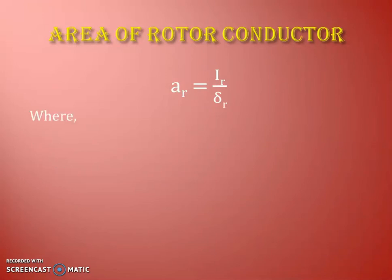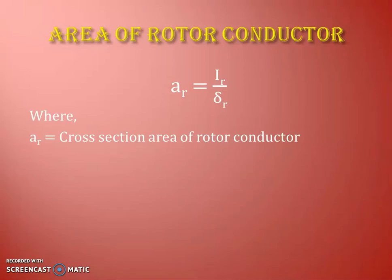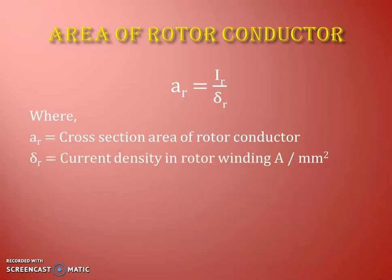AR is the cross-sectional area of the rotor conductor and delta R is the current density in the rotor winding in amperes per millimeter square. To avoid excessive rotor copper loss, we choose the current density in the rotor almost equivalent to the stator current density. We use a round type conductor for smaller motors and a bar type conductor for larger motors.